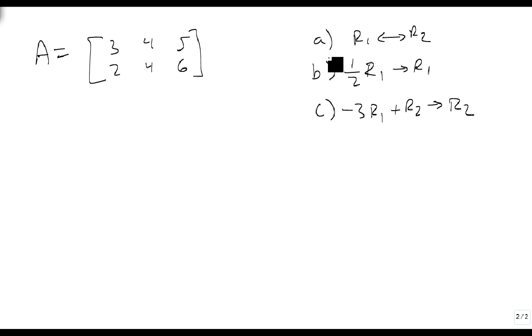And what we're going to do is we're going to do these three operations in order. So the first thing we're going to do is we're going to swap row 1 with row 2. So my new matrix is 2, 4, 6, and 3, 4, 5. Now, so that's A. We just did A to go from here to here.